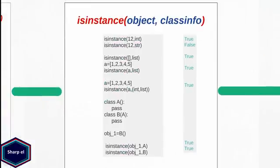isinstance is one of the simplest functions in Python. It takes an object and a class as arguments. If the object is an instance of that class, isinstance returns boolean true.